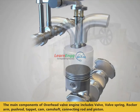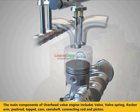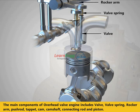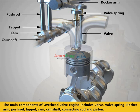The main components of overhead valve engine include valve, valve spring, rocker arm, push rod, tappet, cam, cam shaft, connecting rod and piston.